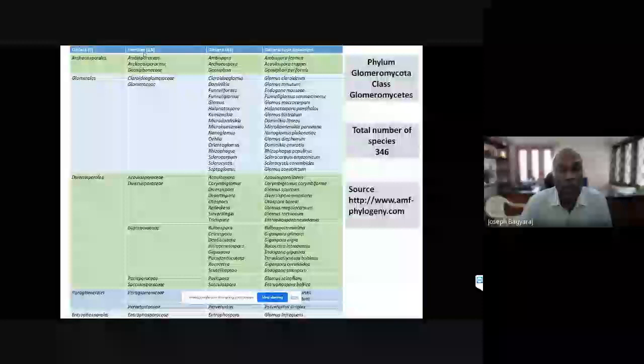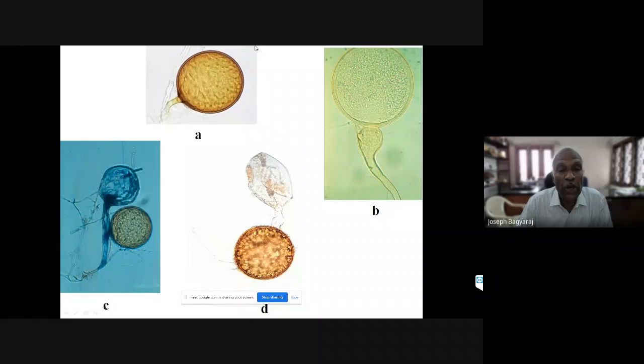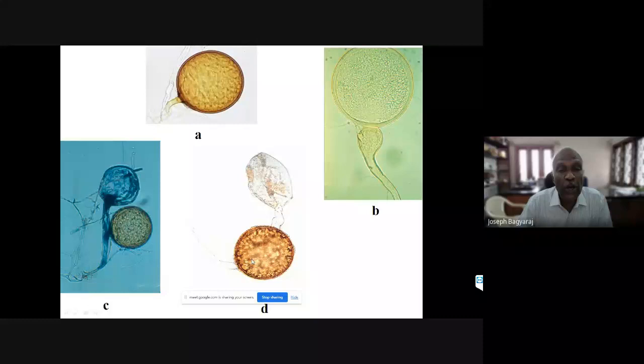There are five orders of AM fungi with 13 families, 41 genera, and 346 species. Though there are 41 genera, the most common throughout the world are four: Glomus, Gigaspora, Acaulospora, and Scutellospora. Of these four, the most common is Glomus - if you collect soil from your college or university campus, you will almost certainly find Glomus.